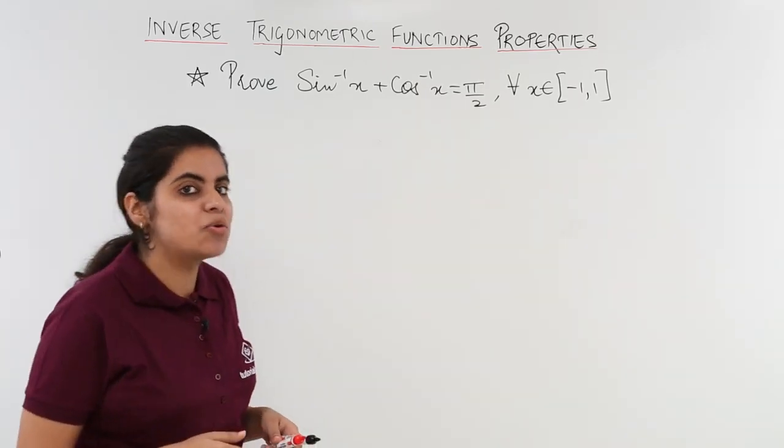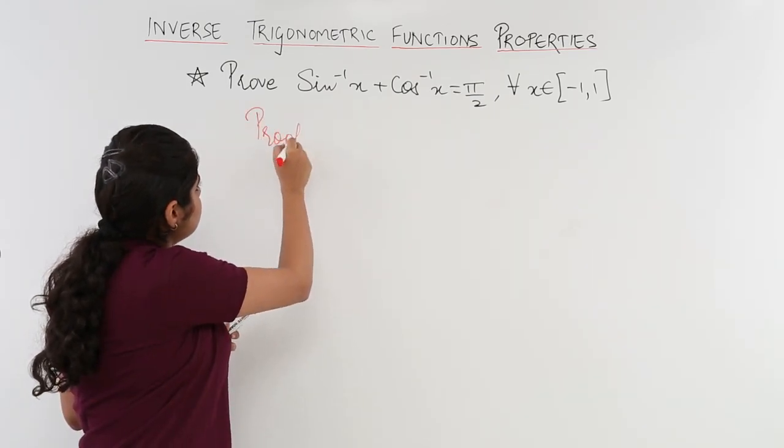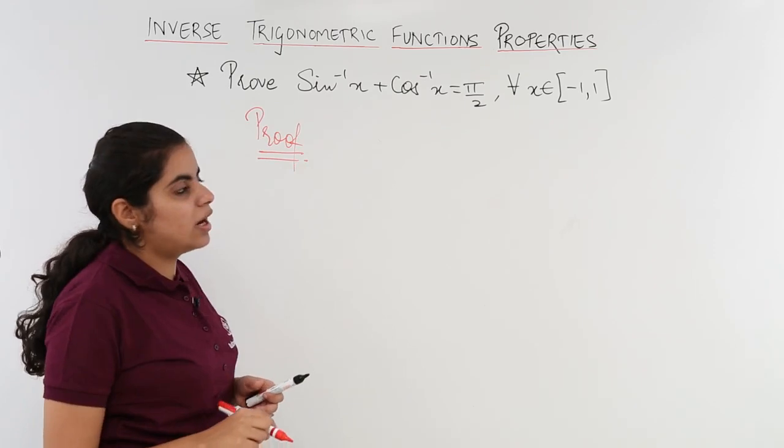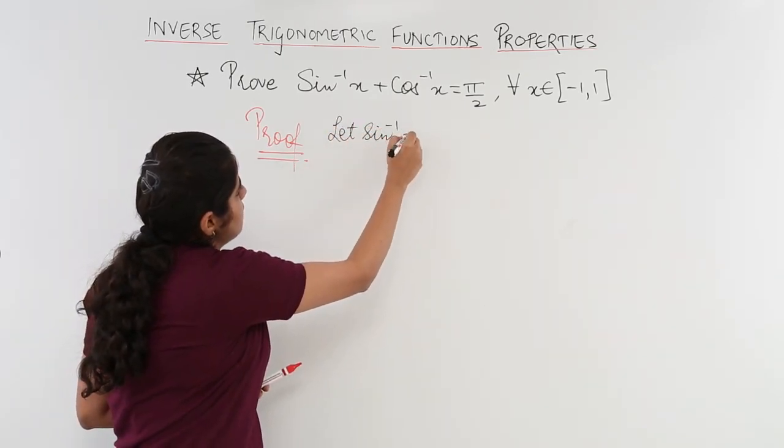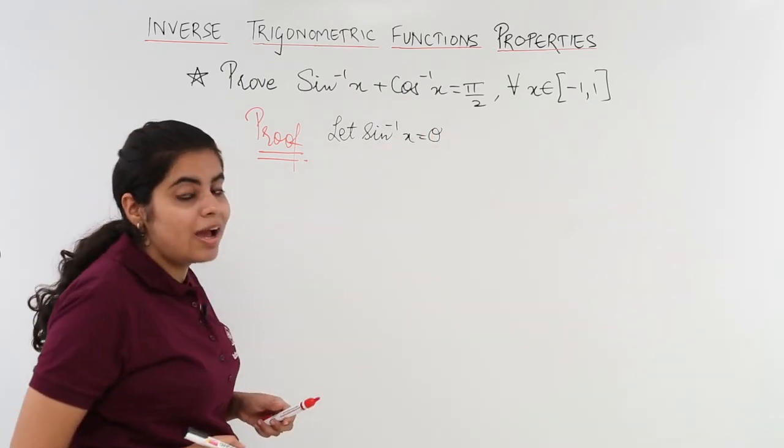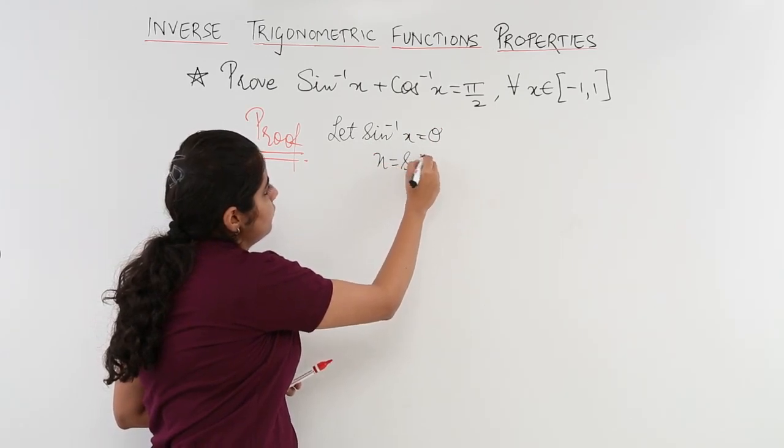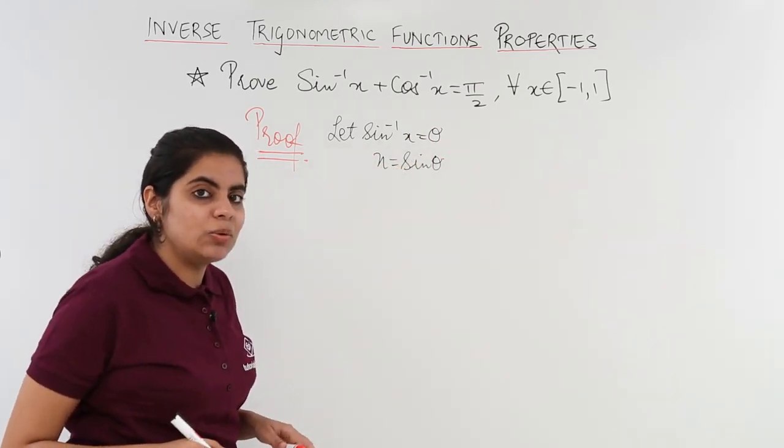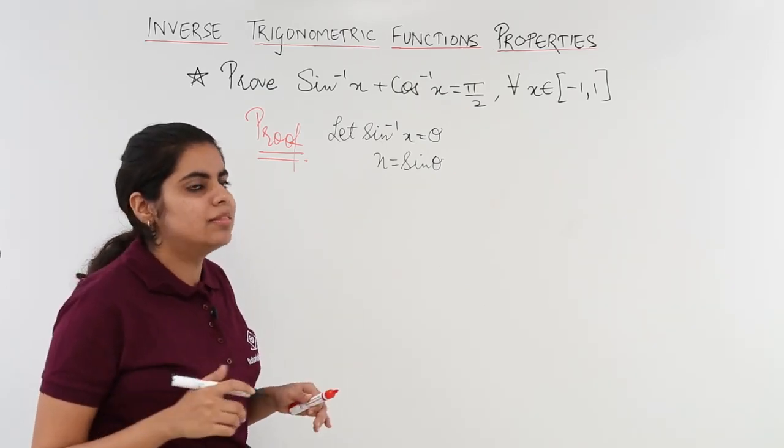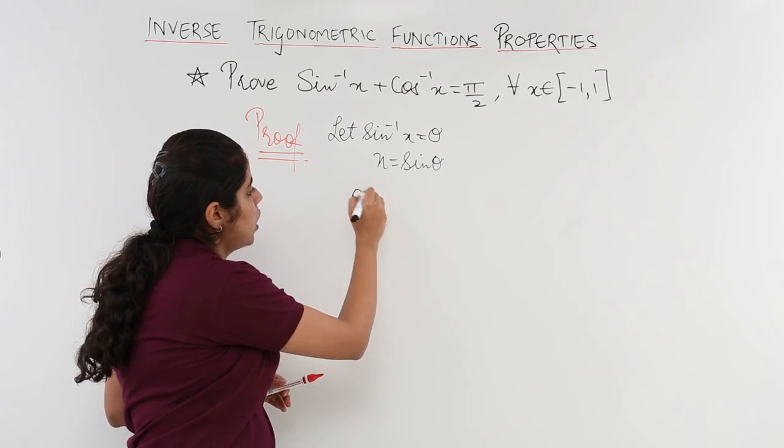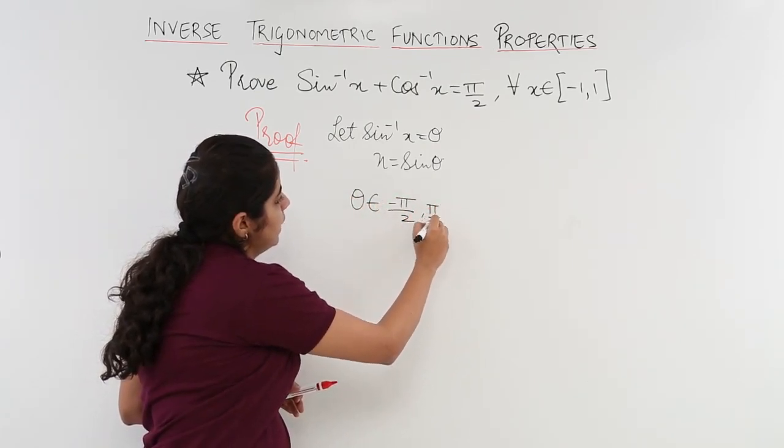Let's see how to prove this property. I write the heading as proof and it is what I have let sin inverse x is equal to theta that means x is equal to sin theta. Also I know that my theta should lie between what range? My theta should be something from minus pi by 2 to pi by 2.